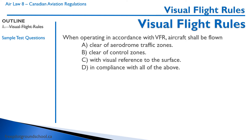Question: when operating in accordance with VFR, an aircraft shall be flown — A, clear of aerodrome traffic zones; B, clear of control zones; C, with visual reference to the surface; or D, in compliance with all the above. The correct answer is C — with visual reference to the surface. D is incorrect because we don't have to be clear of control zones; we fly into them all the time.